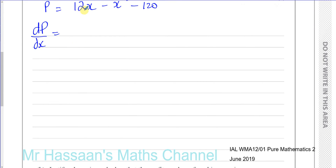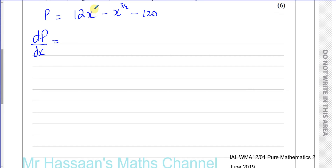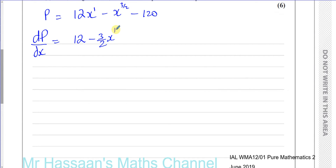So dP/dx is equal to: multiply the power by the coefficient — there's a 1 in front of 12X — giving 12. Then for the second term, 3/2 times minus 1 gives minus 3/2, times X to the power of a half (subtracting 1 from the power of 3/2). The constant 120 disappears because it becomes 0 when differentiated. So dP/dx equals 12 minus 3/2 times X to the power of a half.